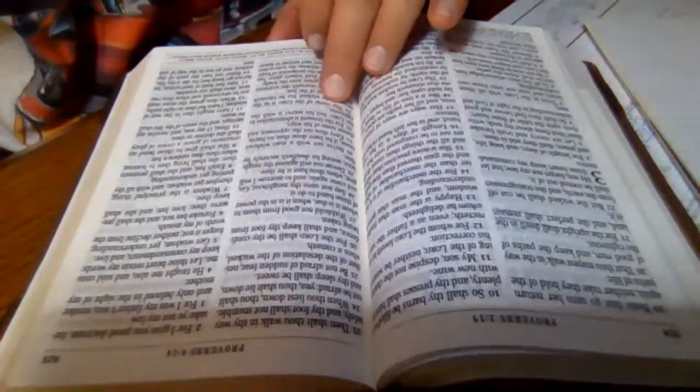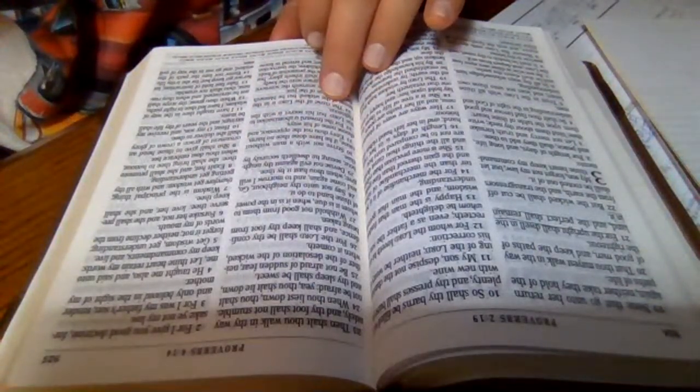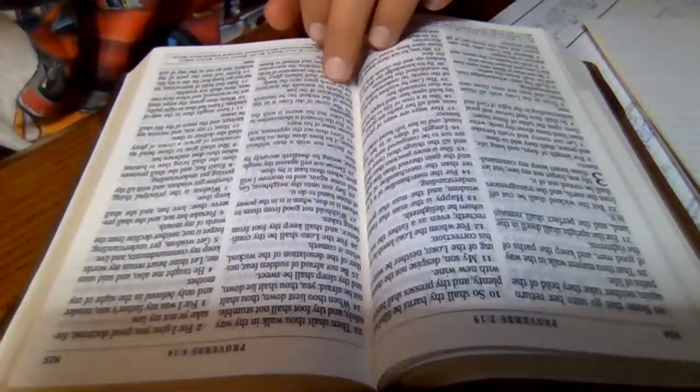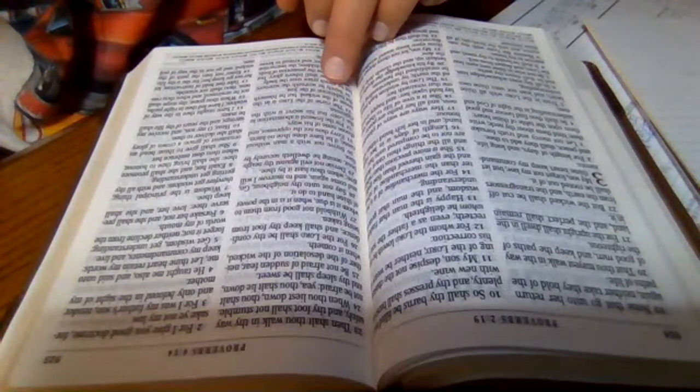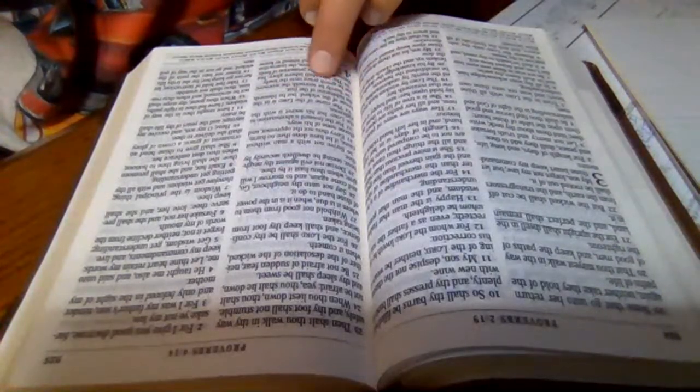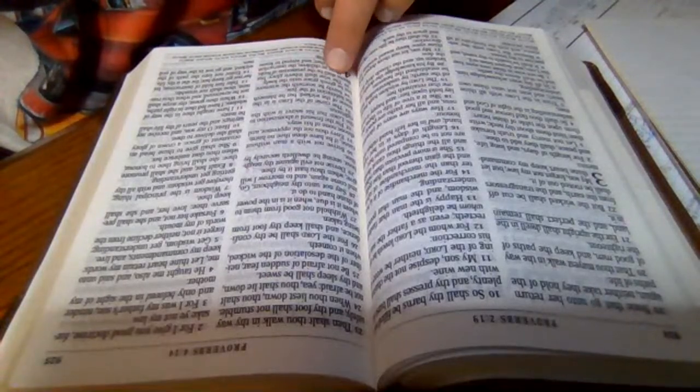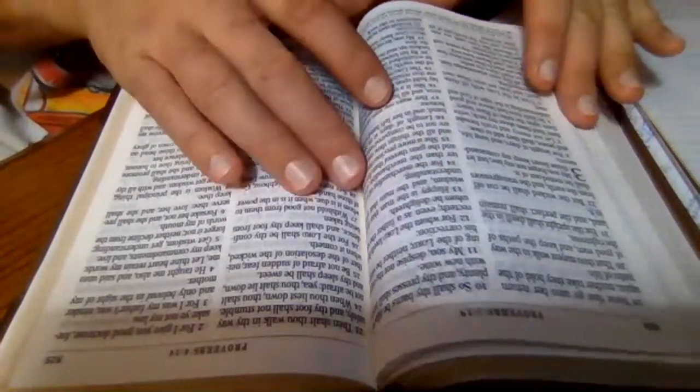For the froward is abomination to the Lord, but his secret is with the righteous. The curse of the Lord is in the house of the wicked, but he blesseth the habitation of the just. Surely he scorneth the scorners, but he giveth grace unto the lowly. The wise shall inherit glory, but shame shall be the promotion of fools.